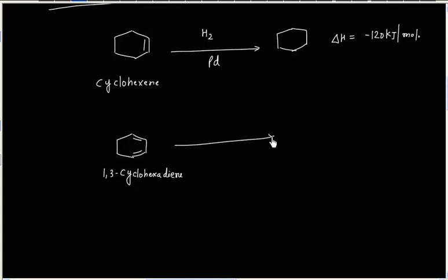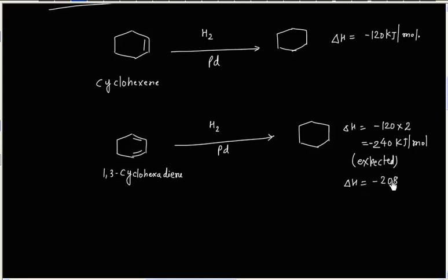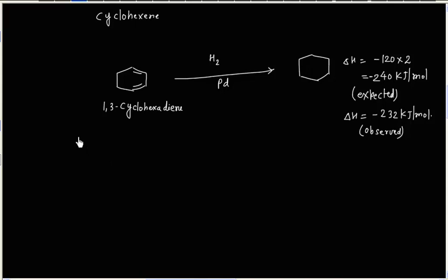Consider hydrogenation of 1,3-cyclohexadiene. This also gives cyclohexane. In this process, expected energy released is 240 kJ per mole. But the actual energy released is only 232 kJ per mole. This difference in energy is defined as resonance energy.